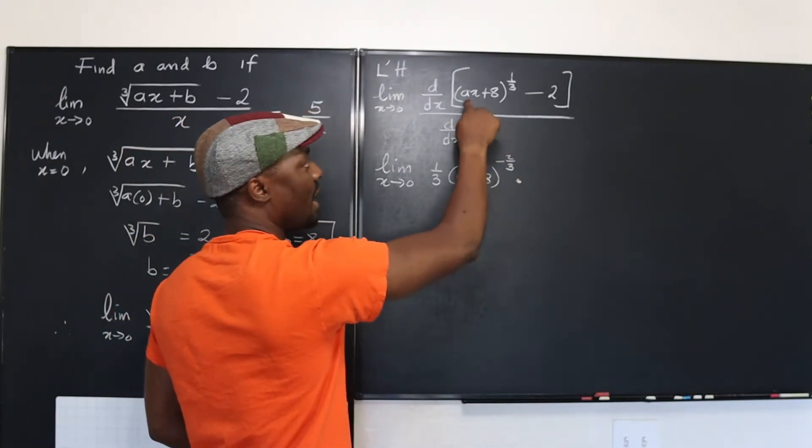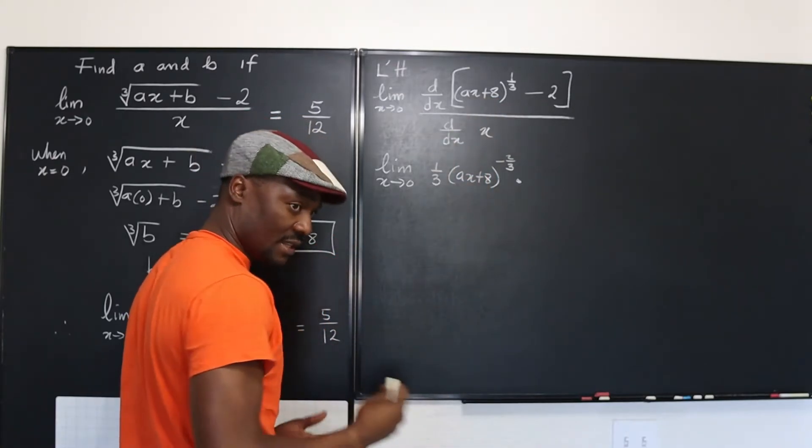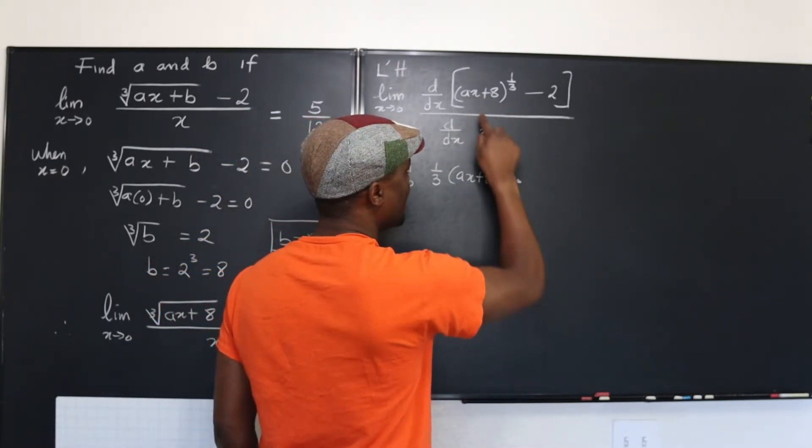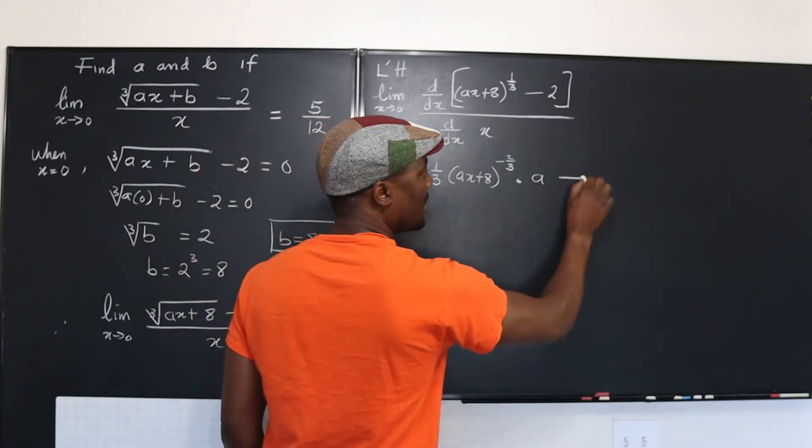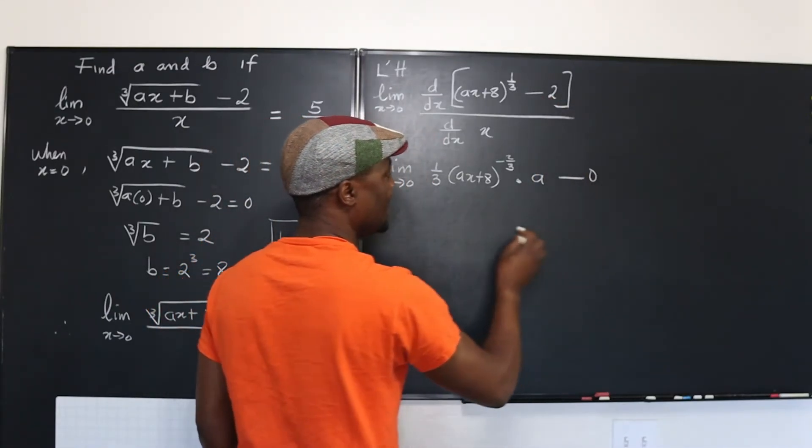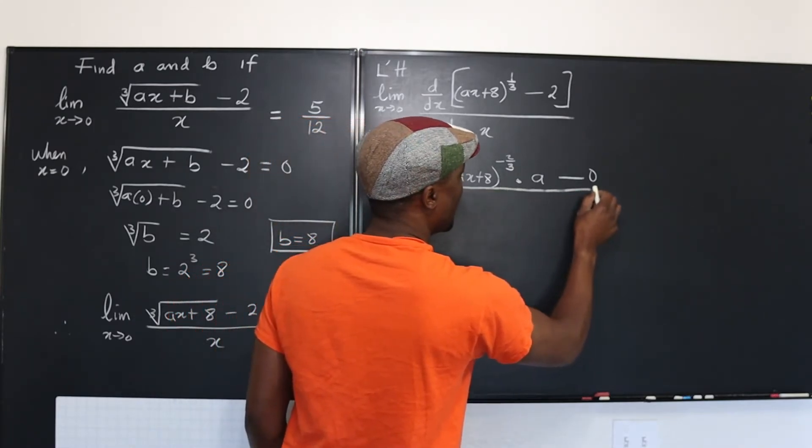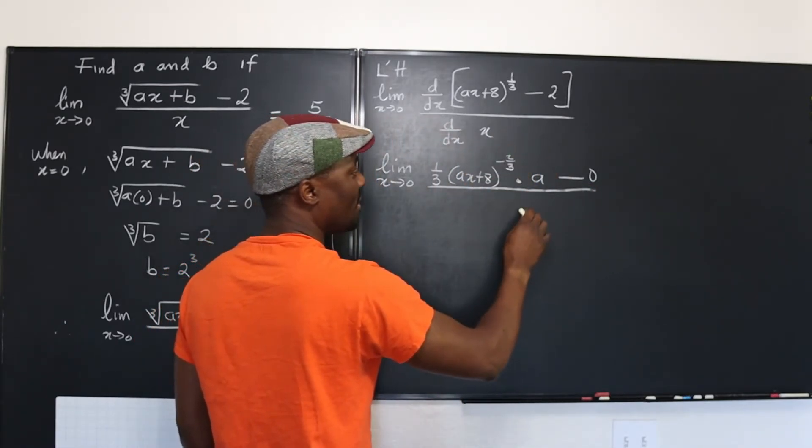Then you multiply it, remember, by the derivative of the inside. That's the chain rule. That's going to be just A. Okay, that's what you get. Minus, this is going to give us just zero, divided by, the derivative of x is one.